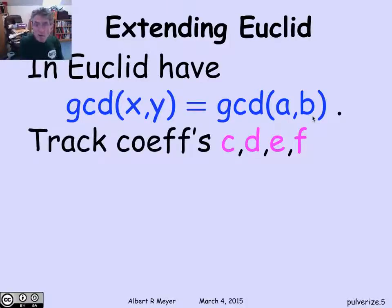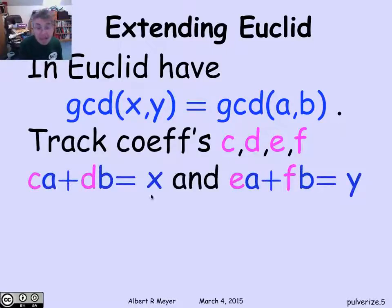We're going to keep track of coefficients called c, d, e, and f, such that whatever x we're up to, we know how to express as a linear combination of A and B. And whatever y we're up to, we can also express as a linear combination of A and B. This property is going to be another invariant of our extended Euclidean algorithm, or pulverizer.